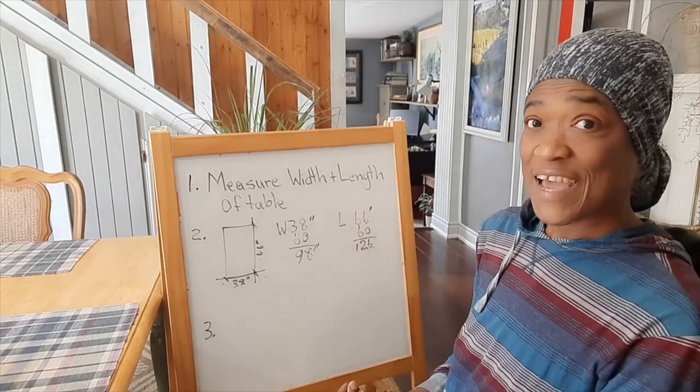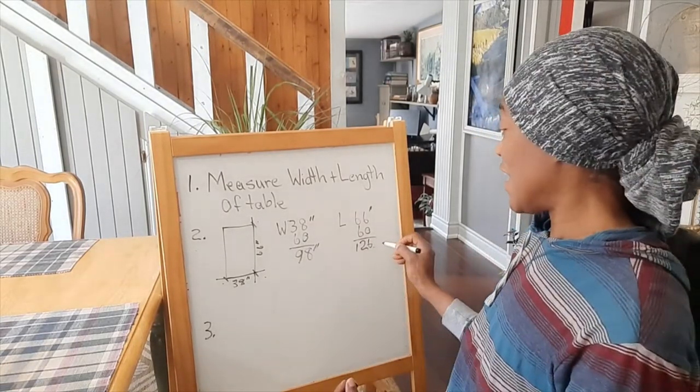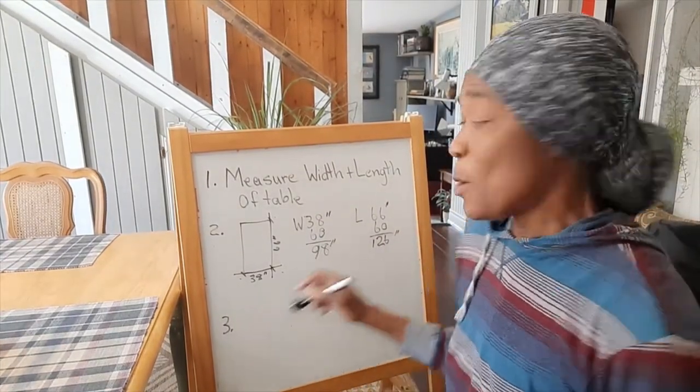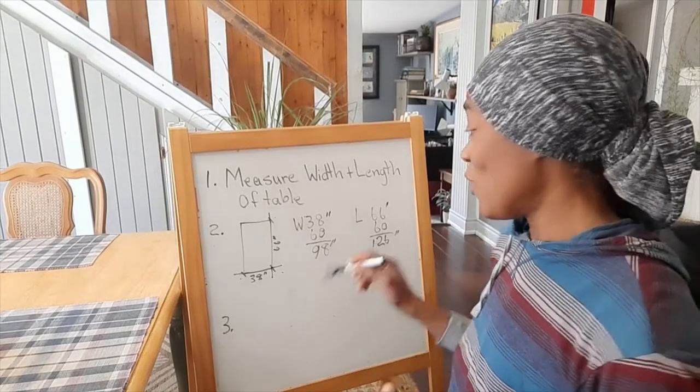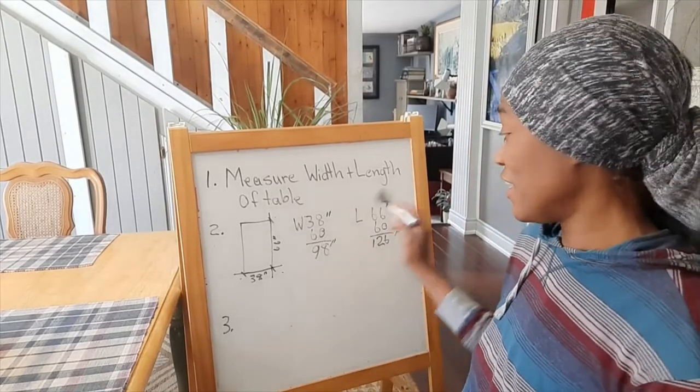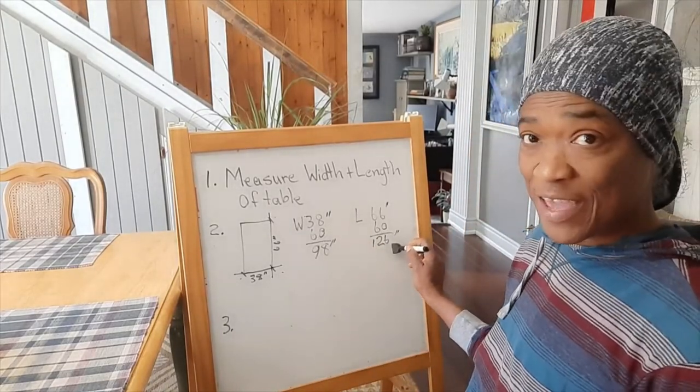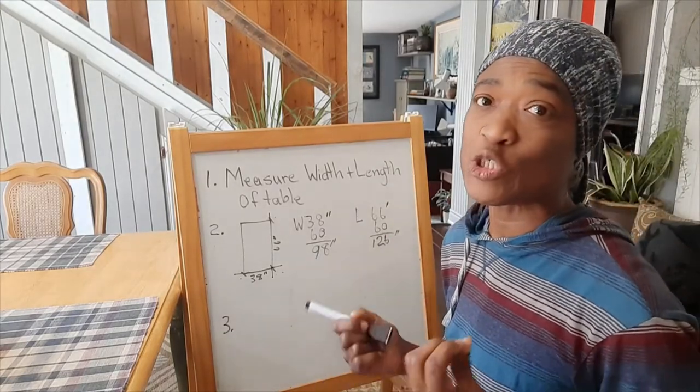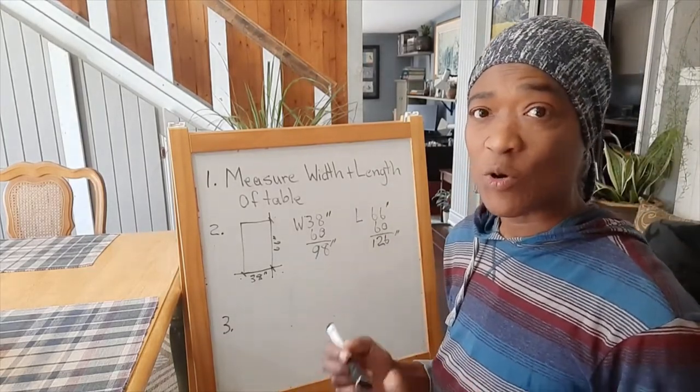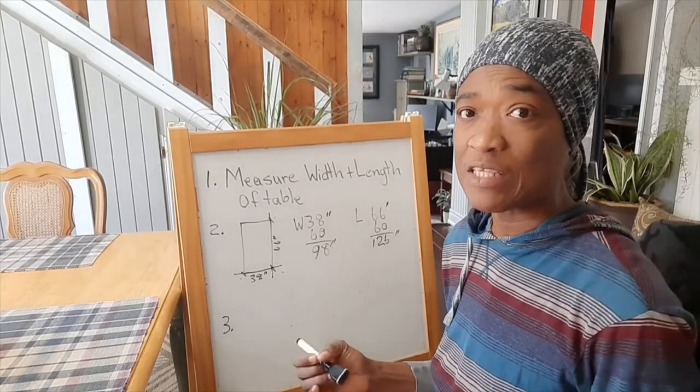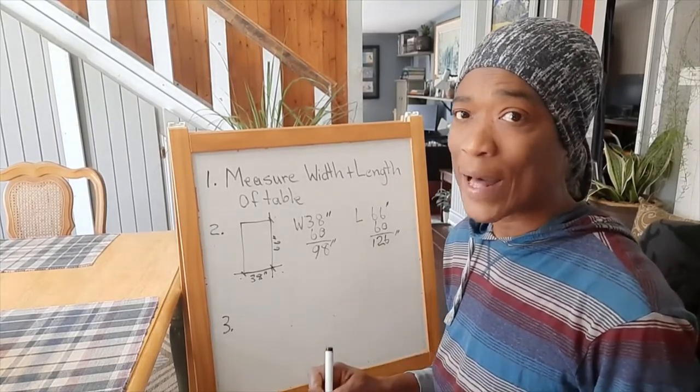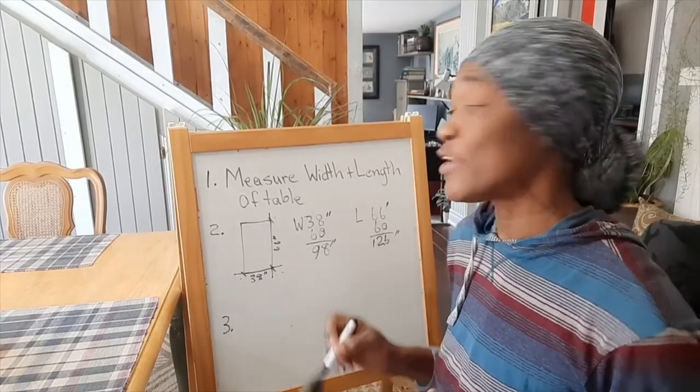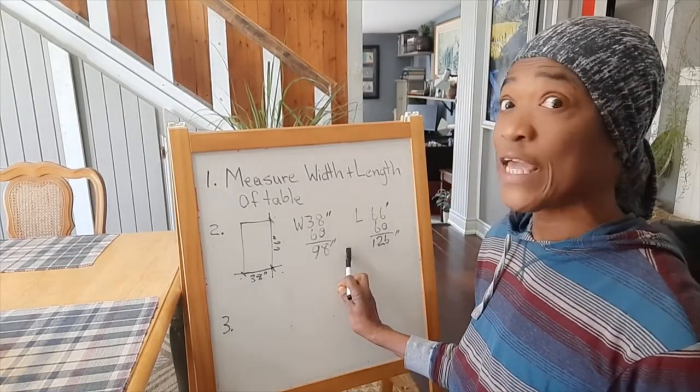That gives me 126 inches. Number three: we'll take our width and length measurements and convert them to feet. To convert to feet, we divide by 12 because there are 12 inches in a foot. We need to find out how many feet are in 98 inches and 126 inches.